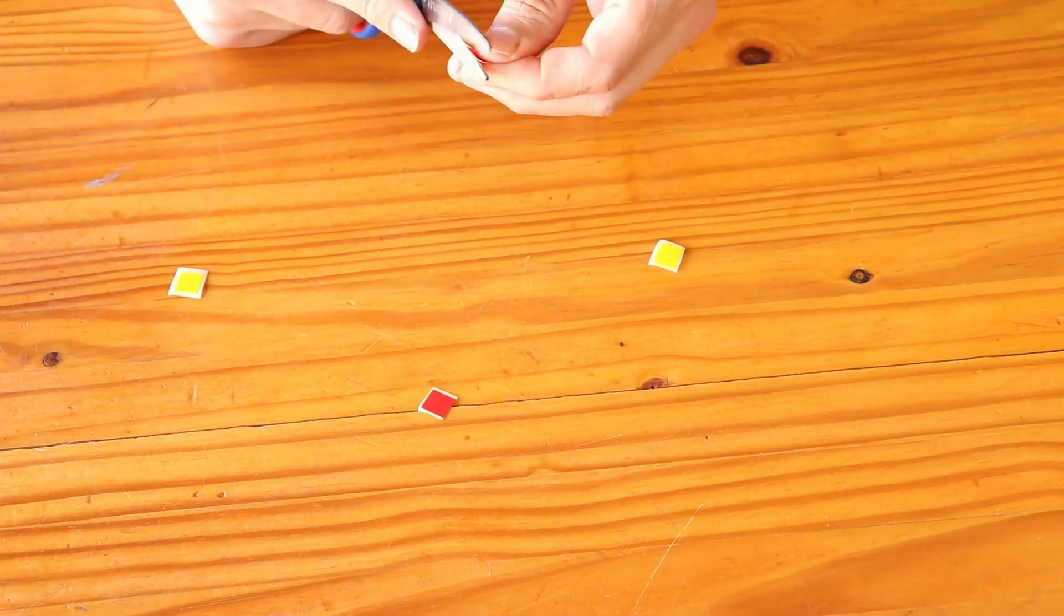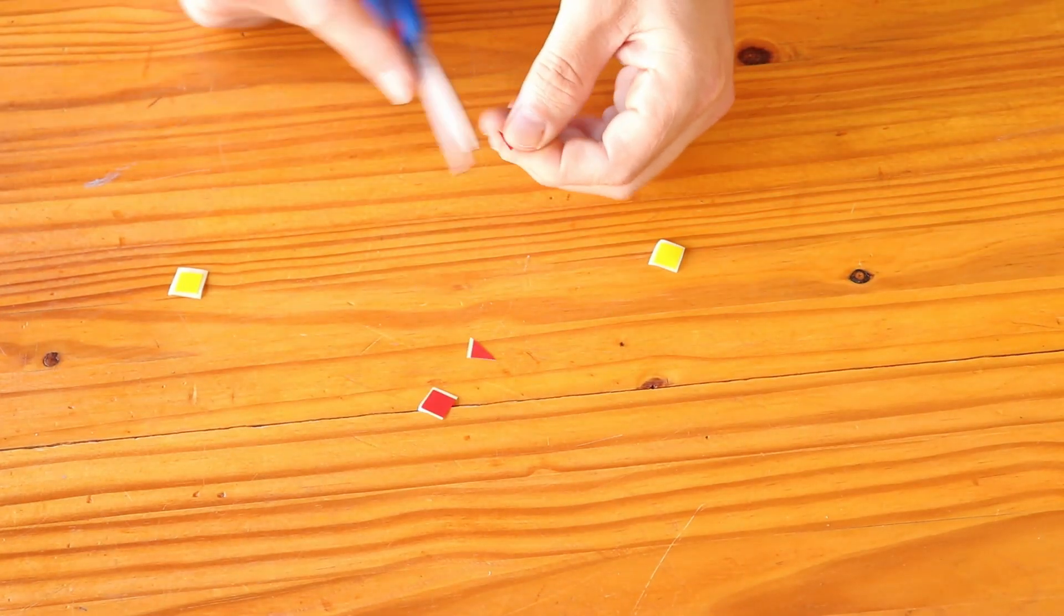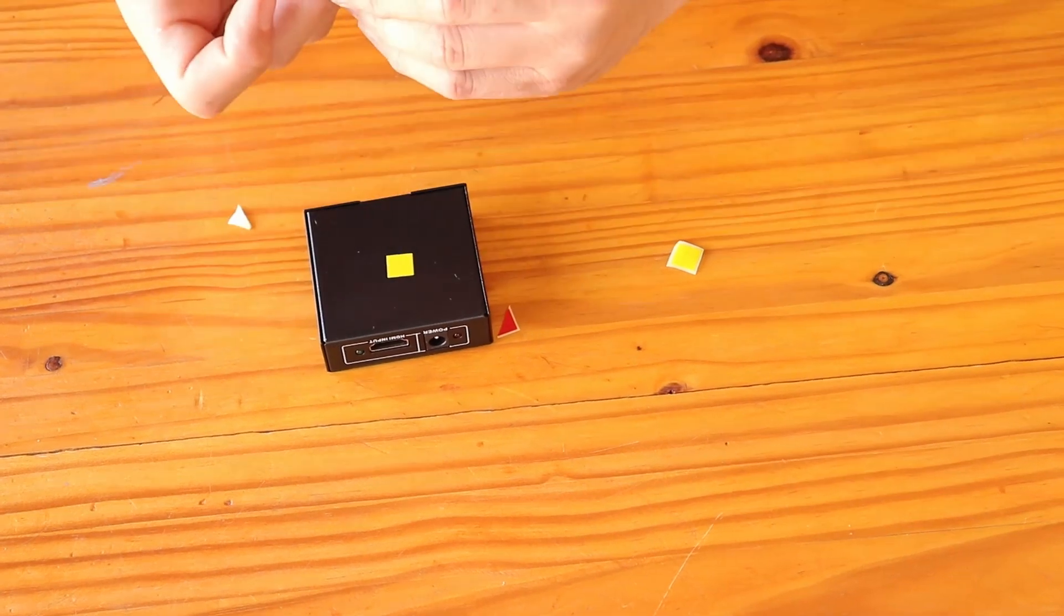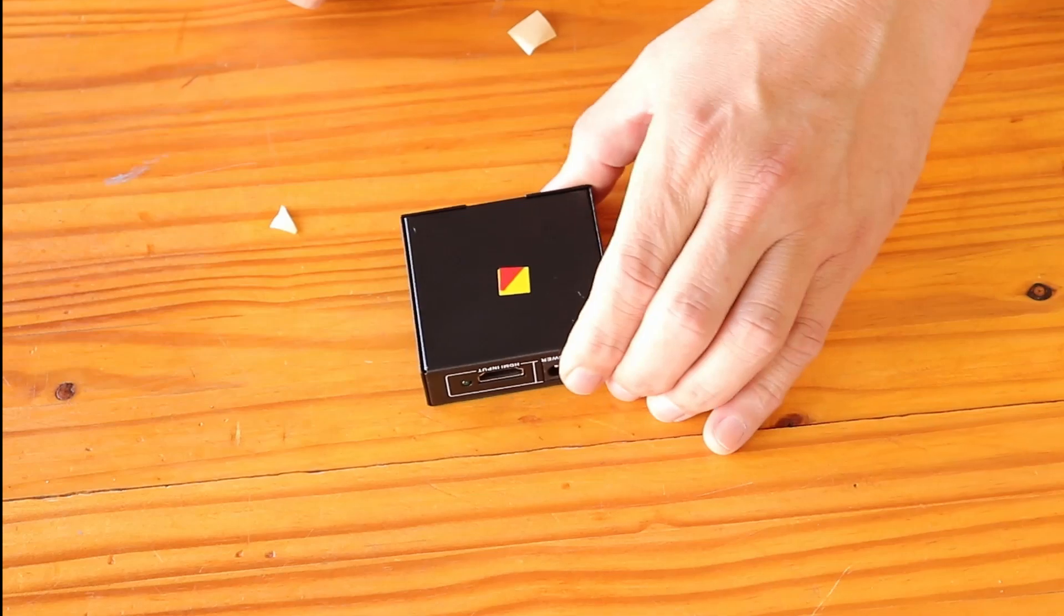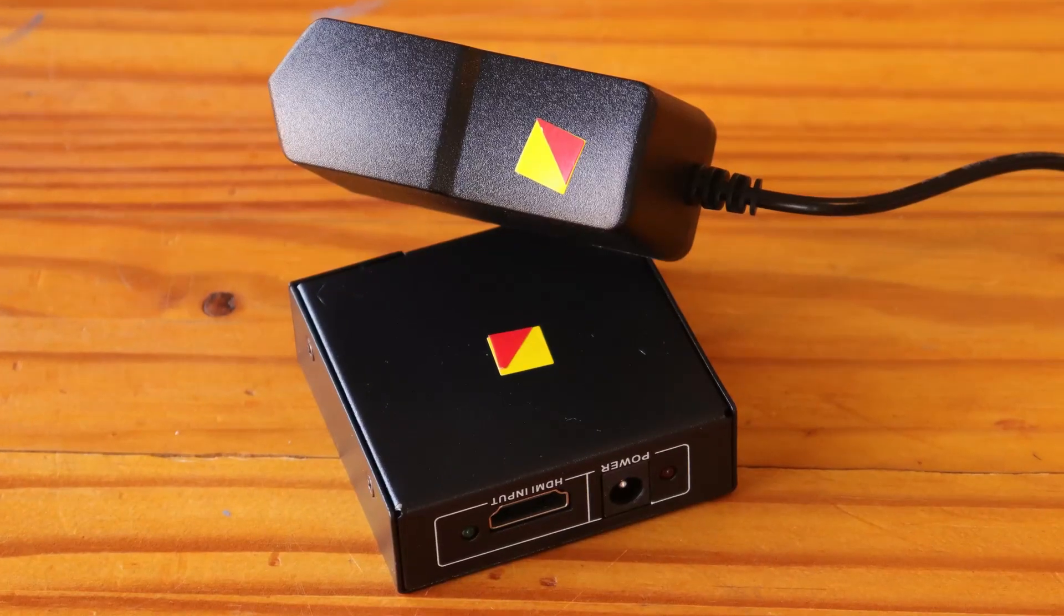Cut out another sticker and start creating two unique shapes. On the back of your power supply and device, place the sticker on top of the other and create a new pattern that will always let you know what goes with what.